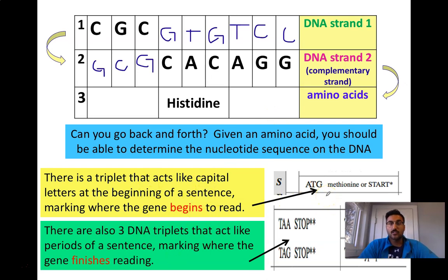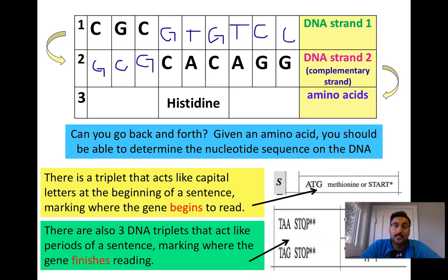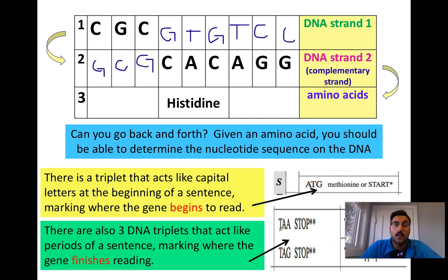There are start codons and stop codons. ATG codes for the amino acid methionine if it's in the middle of a sequence, but if it starts the sequence, ATG is called a start codon. There are also multiple stop codons — these are DNA triplets that code for an amino acid which actually cuts and ends the protein so it can be formed into an official protein and used in the body. It tells the protein synthesis process to stop, so the completed strand can go form into a full protein — a hormone, a skin cell, a hair cell, whatever it's meant to be.